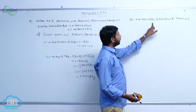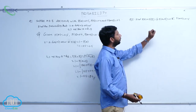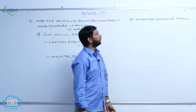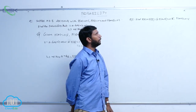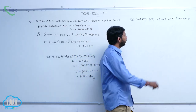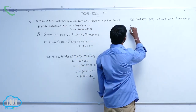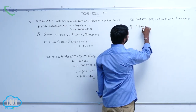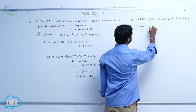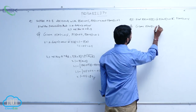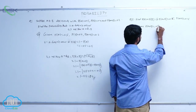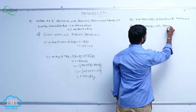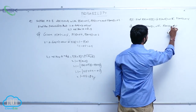Find P of A bar plus P of B bar, given P of A union B is equal to 0.65 and P of A intersection B is equal to 0.15.